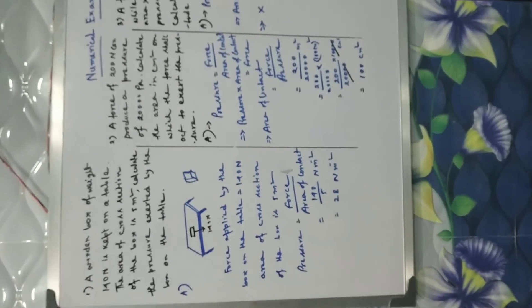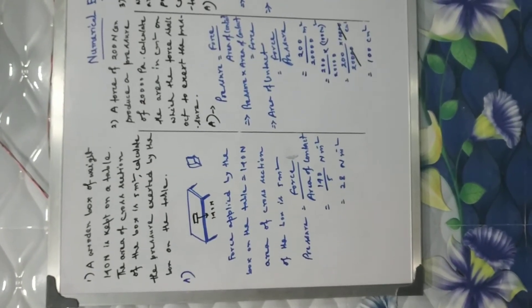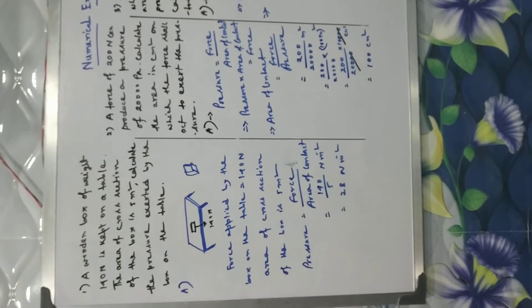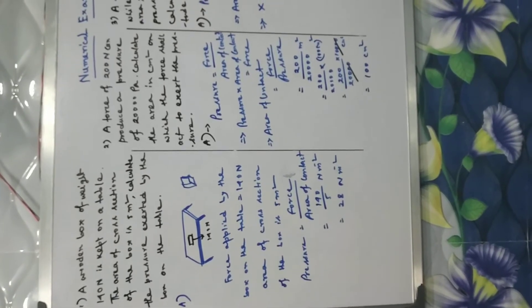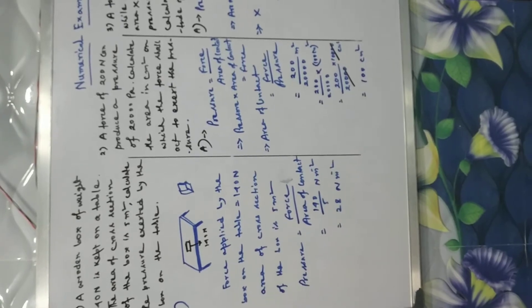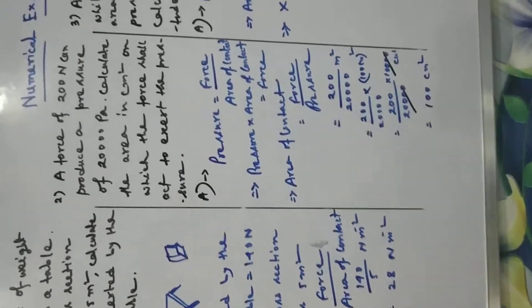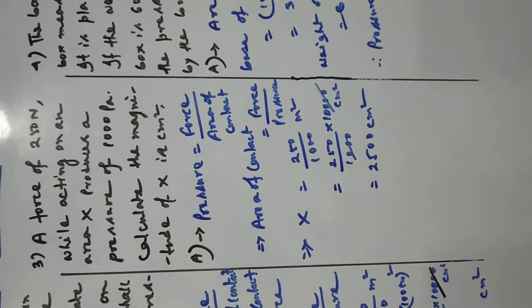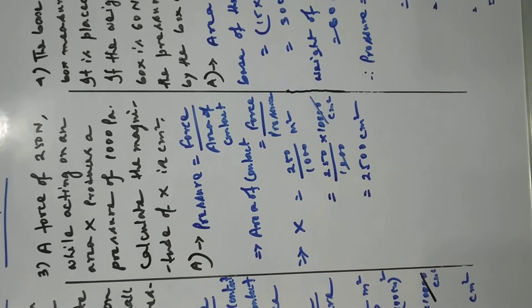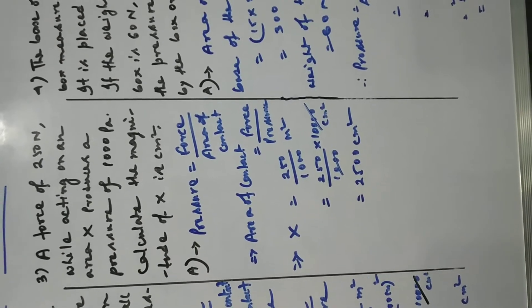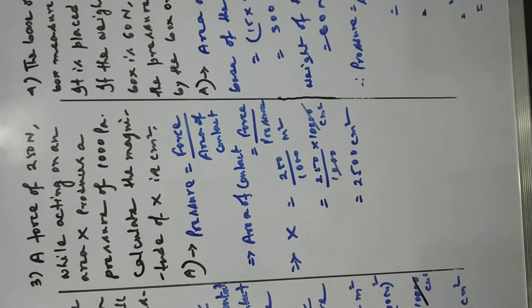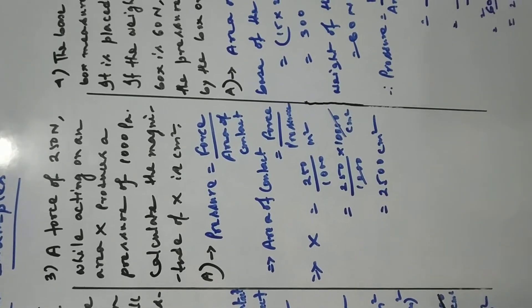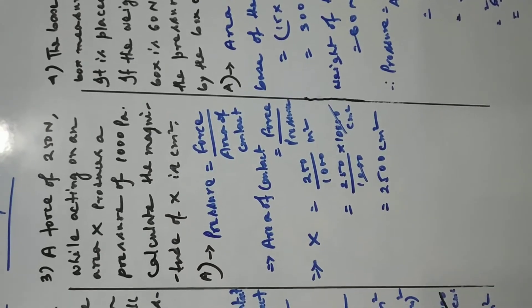In the first example, force and area of contact were given and we had to find the pressure. In the second example, pressure and force were given and we had to find the area of contact. Now in the third example, which is also similar to the second: a force of 250 Newton acting on an area x produces a pressure of 1000 Pascal. Calculate the magnitude of x in centimeter square.